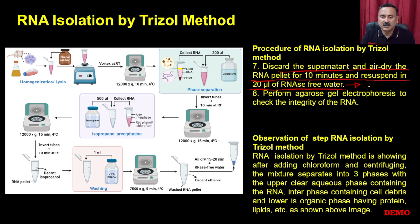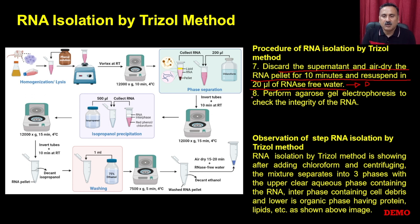Remember, you can either purchase RNA-free water from commercial vendors or prepare it in the laboratory. Then perform agarose gel electrophoresis to check the integrity of the RNA. We are going to discuss how to run RNA gels and test whether RNA quality is good when we discuss northern blotting.